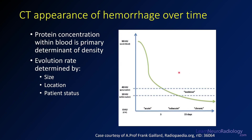This chart from Radiopedia shows the density of hemorrhage over time. Early on it's very dense — up to 80 or 90 Hounsfield units. Within three to five days it gets closer to gray matter density, and over time it becomes less dense in a chronic hemorrhage. The evolution varies a lot based on size, location, and how healthy the patient is, but the general trend always remains: it starts dense and gets less dense over time.